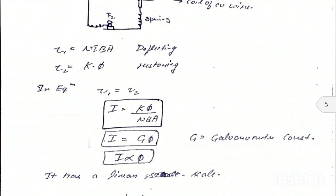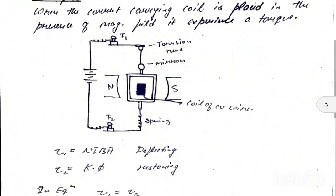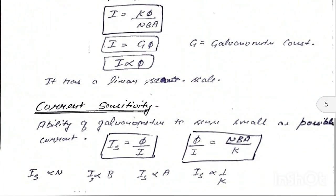Current sensitivity: the ability of a galvanometer to sense as small a current as possible is known as its current sensitivity. Current sensitivity = φ/I = NBA/K. Current sensitivity is directly proportional to number of turns, magnetic field, and area of the coil, and inversely proportional to the restoring constant K.